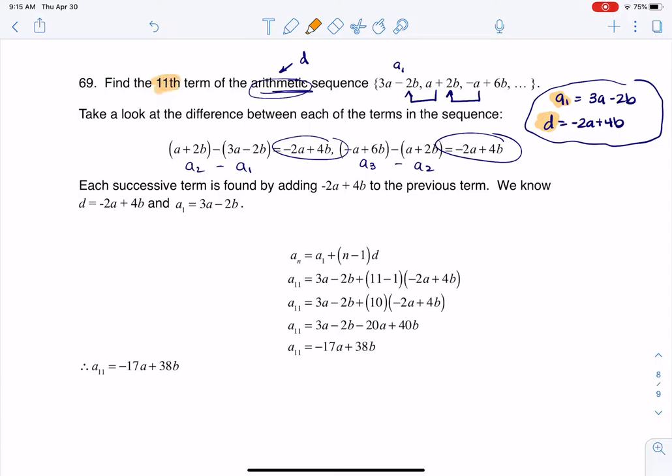And we need the 11th term, so I'm going to go ahead and use my arithmetic sequence formula, and we're going to plug in n being 11, right? a sub 1 is going to be 3a minus 2b, n itself is going to be 11, and the d value is going to be negative 2a plus 4b. And what I'm going to solve for is a sub 11.